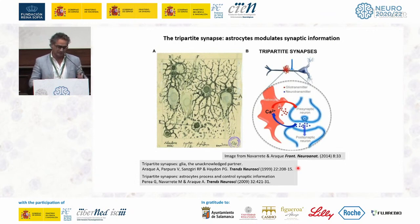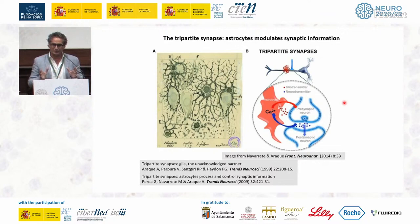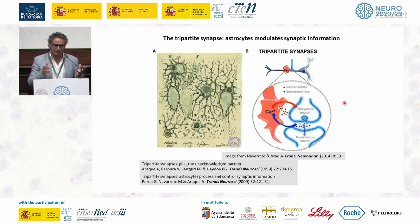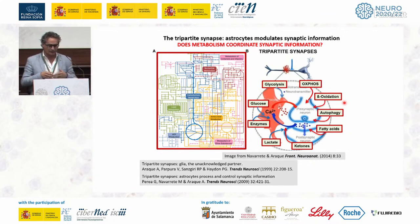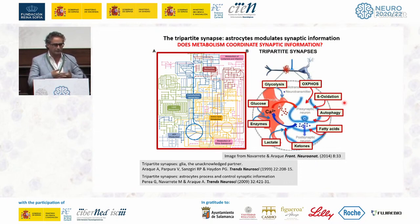It is very well known, especially from the work of Alfonso Araque, that astrocytes play a very important role in coordinating neurotransmission — the so-called tripartite synapse. This is well characterized; however, it has been studied deeply only in the sense of neurotransmitter release and signaling. Very little is known about how metabolism contributes to the control of synaptic transmission, especially how each cell type provides energy and neurotransmitter-related signals.